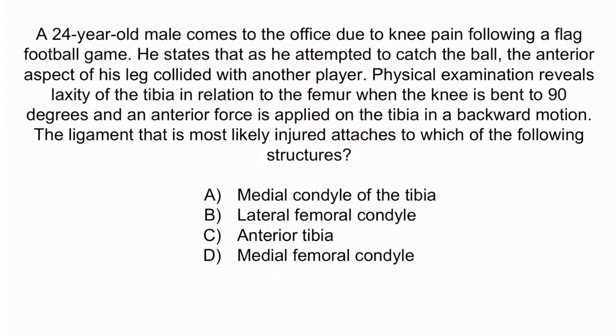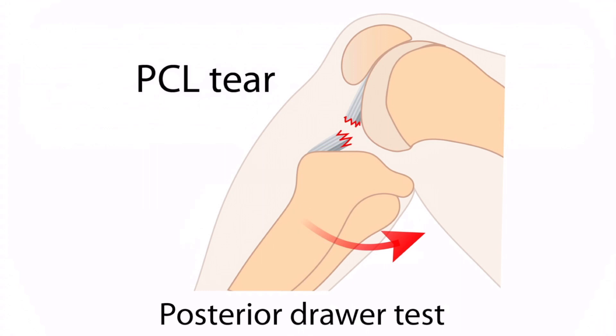From the question stem, this patient most likely has a PCL injury. We can deduce this based on the description of the accident and the physical exam findings. The anterior aspect of his leg collided with another player — this describes a contact sports injury with a blow directed at the anterior aspect of the leg, both suggestive of a PCL injury. Furthermore, the physical exam is describing a positive posterior drawer test. In the posterior drawer test, the knee is bent to 90 degrees and force is applied on the tibia in a backward motion. If there is greater than expected laxity of the tibia in relation to the femur, the test is positive, indicating a PCL tear. This is exactly what the question stem described.